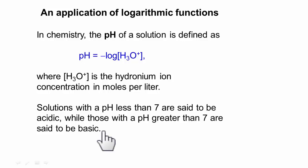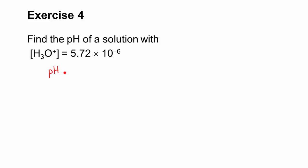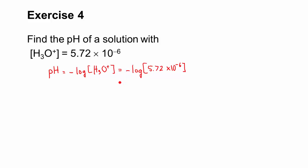In exercise 4, find the pH of a solution with this concentration. The pH is equal to the negative of the log of H₃O⁺. All you have to do is plug in the number, so it becomes the negative of the log of 5.72 times 10 to the negative 6. Just enter all this in your calculator — don't forget the negative in the front — and you get 5.24, rounded to two decimal places.